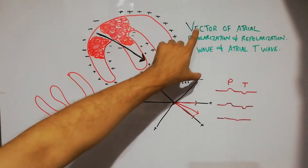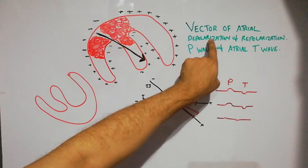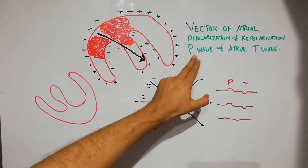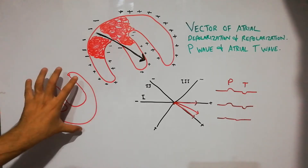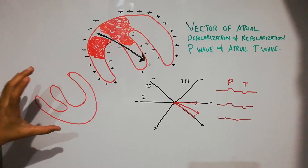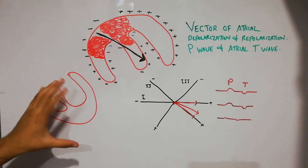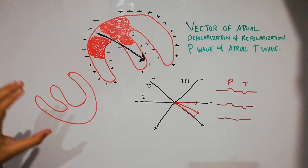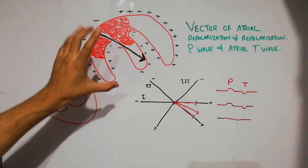Today we are going to discuss the vector of atrial depolarization and repolarization, or the P wave and atrial T wave. So far we have discussed the depolarization, repolarization and vector analysis for depolarization and repolarization of the ventricles. Today we are going to discuss the same thing for the atria.